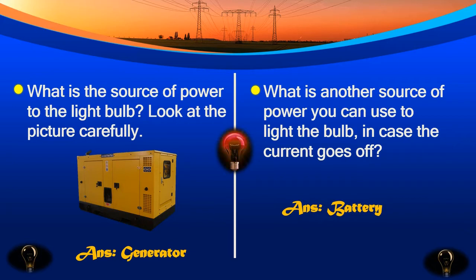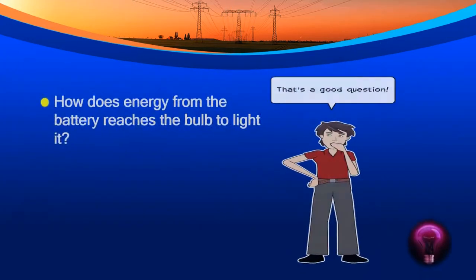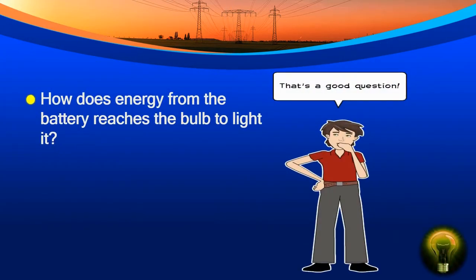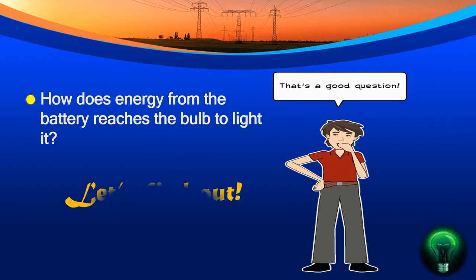What is another source of power you can use to light the bulb in case the current goes off? A battery. Very good. How does energy from the battery reach the bulb to light it? Let's find out.